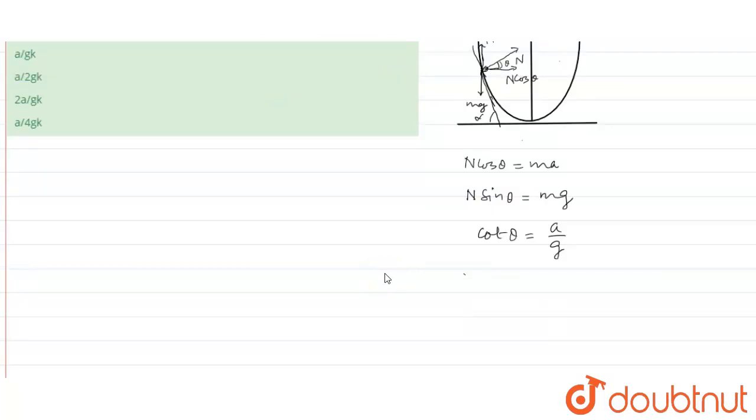Here, I can write slope at that point is equal to tan alpha and we know from geometry that if this angle is alpha, this will also be alpha. Then, I can say theta plus alpha is equal to pi by 2.